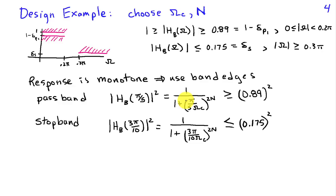So, we require that at the pass band edge, when omega is pi over 5, or 0.2 pi, the magnitude response squared, which takes the form 1 over 1 plus pi divided by 5 omega c raised to the 2n, has to be greater than or equal to 0.89 squared. Similarly, at the stop band edge, when omega is 0.3 pi, we require that the magnitude response squared, which is 1 over 1 plus 3 pi divided by 10 omega c, quantity to the 2n, has to be less than 0.175 squared.